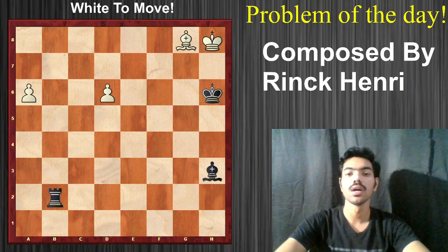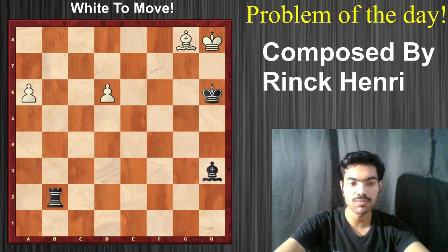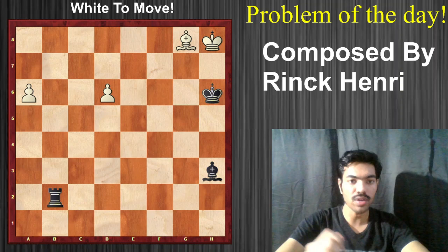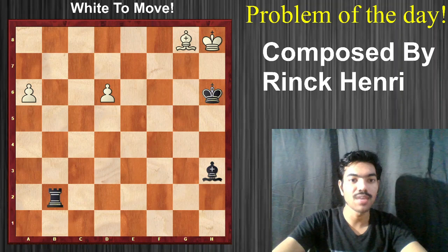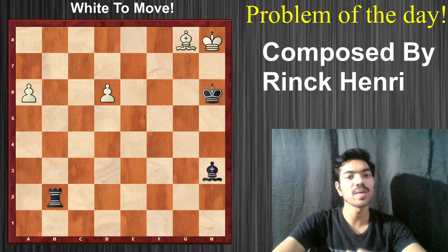I've got an absolutely stunning chess problem for you guys — this one is really brilliant. It was composed by Rink Henry and it's white to play and win the game for white. Go ahead and pause the video; this is a great example for calculation. You can show this to your students if you have any, and if you're a great chess enthusiast who just loves the game, this one is really beautiful.